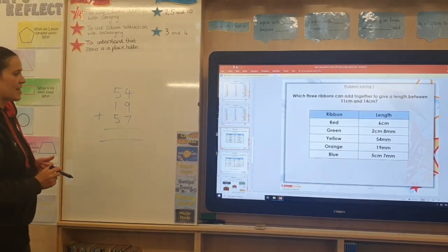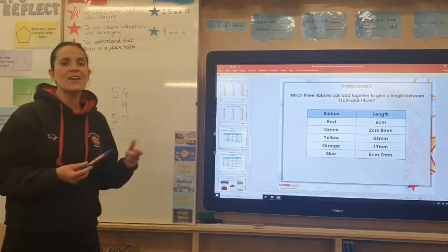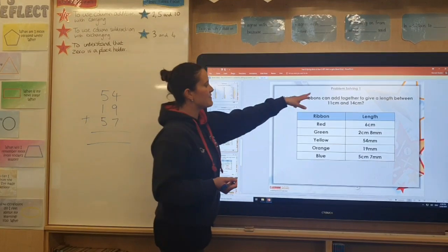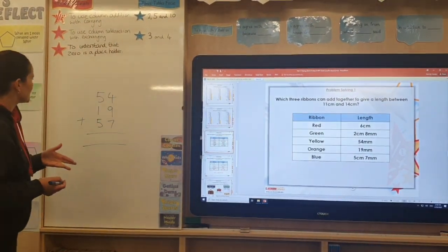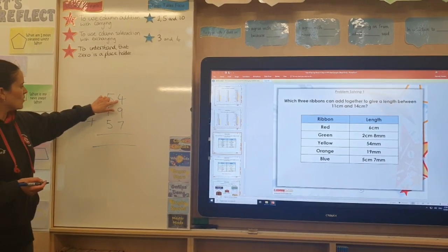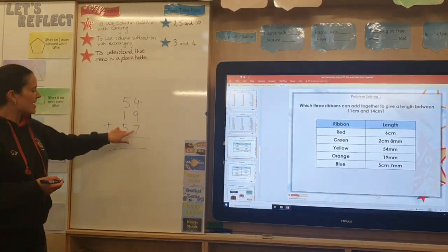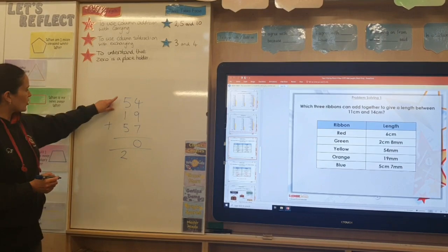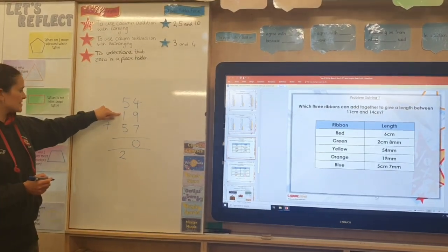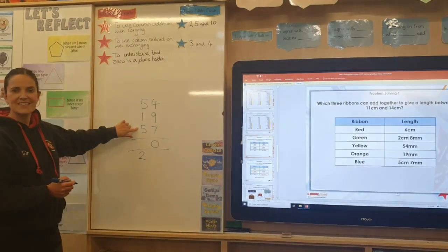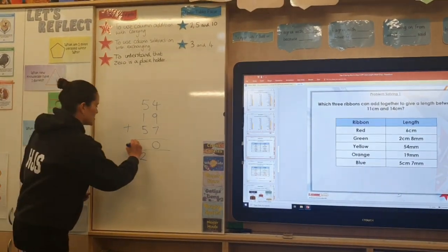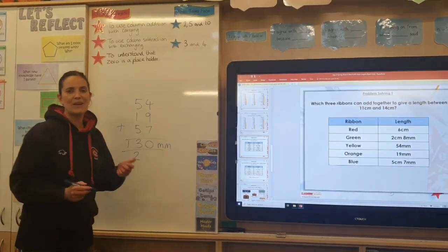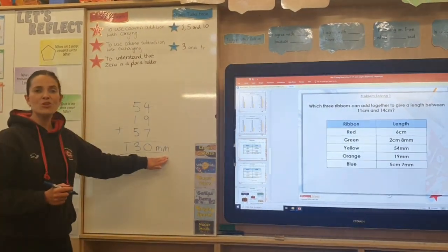If I add those up together, what you should find is that you get your answer, which you can then convert into centimetres to see if it falls between 11 and 14. So if I have got 4 plus 9, which is 13, and I'm going to add on my 7, which would be 20, like this, and then I've got 5 and 1 is 6, plus another 5, which is 11, plus 2, which is 13,